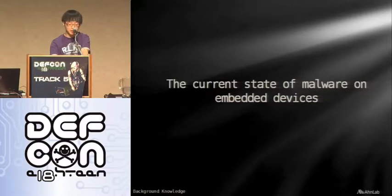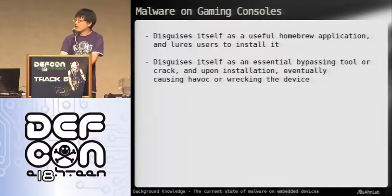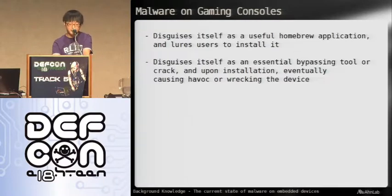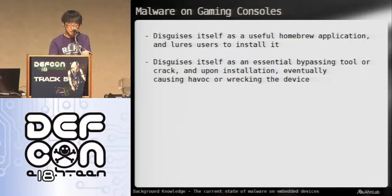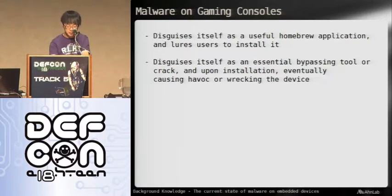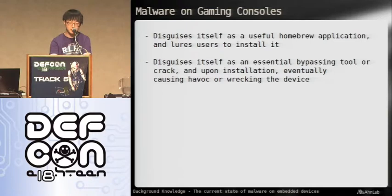We know that there already is embedded device malware running in the wild for quite a while. On gaming consoles, there was a malware that looks like a homebrew and actually does have useful features to make people install it, but the attacker made it so that it had a separate thread running in the background doing lots of sneaky stuff. This is possible because the author of the homebrew application is also the author of the malware, and he can choose to add whatever functionality he wants in his own source code. He would release the clean version of the homebrew to the public, but the executable file will have the malware contained inside, and nobody will really recognize it unless someone is monitoring the network or attempts to reverse engineer the binary.